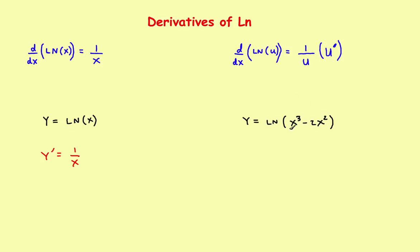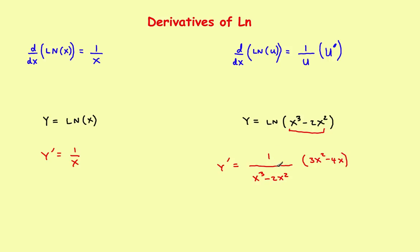If the argument is something more complicated than just a simple x, the definition changes a little bit. It's 1 over the argument times the derivative of the argument. So if y equals the natural log of the quantity x cubed minus 3x, y prime equals 1 over that argument times the derivative of the argument, which is 3x squared minus 4x. If it's a simple x it's just 1 over x; if it's more complicated, it's 1 over the argument times its derivative.